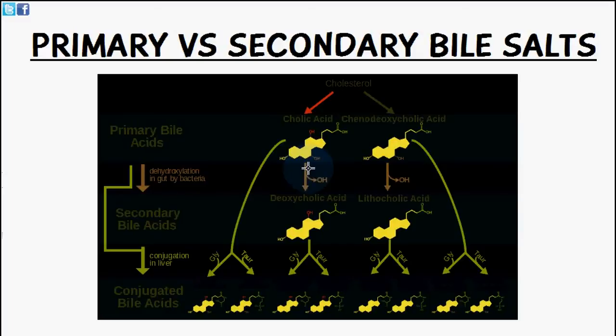Here at the distal end and at the colon there's a higher amount of anaerobic bacteria and they enzymatically deconjugate and then remove the 7α-hydroxy group from the primary bile salts. This forms secondary bile salts, and then what happens is these secondary bile salts also go back to the enterohepatic circulation back to the liver.